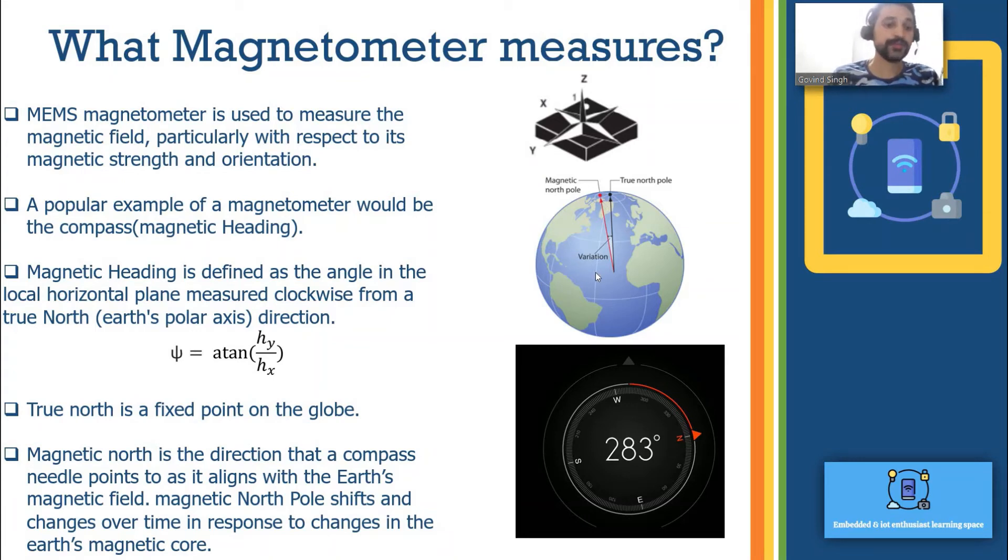Why it is changing? Because the magnetic north pole and south pole change over time in response to the change in the earth's magnetic pole. This angle is called magnetic declination.